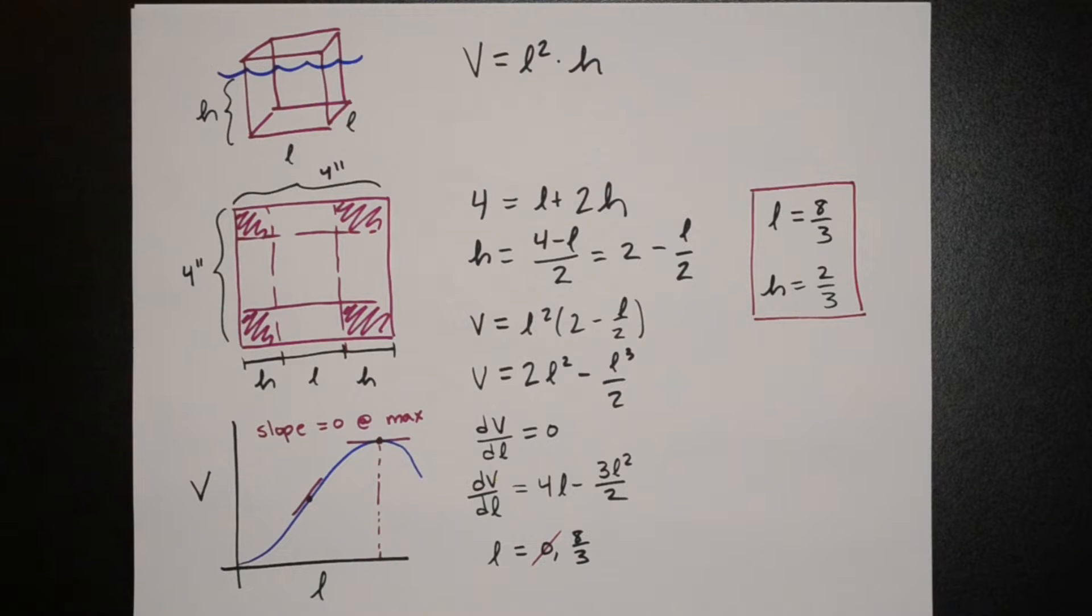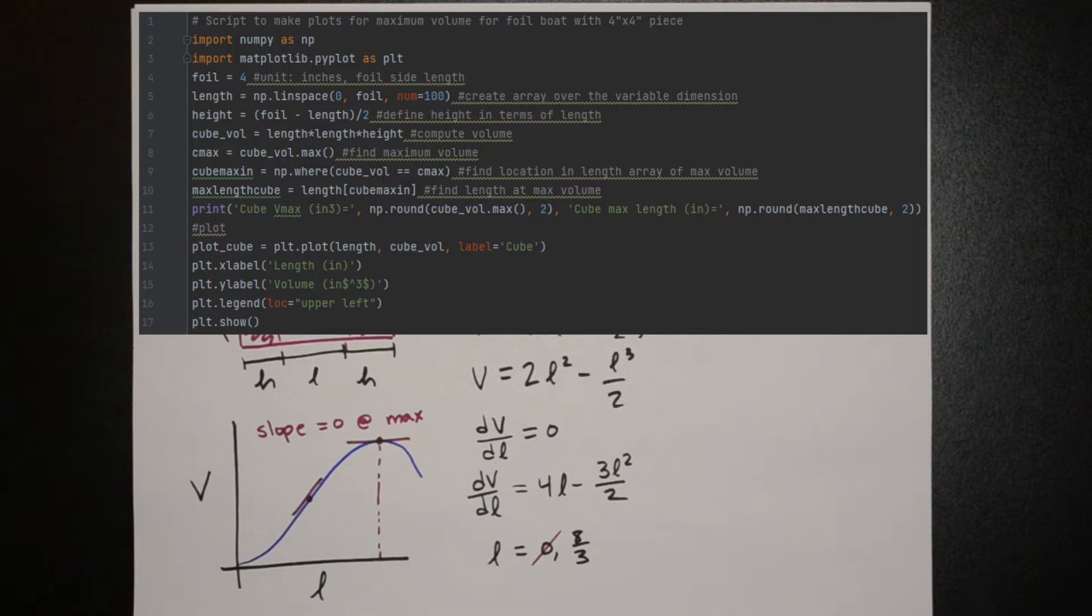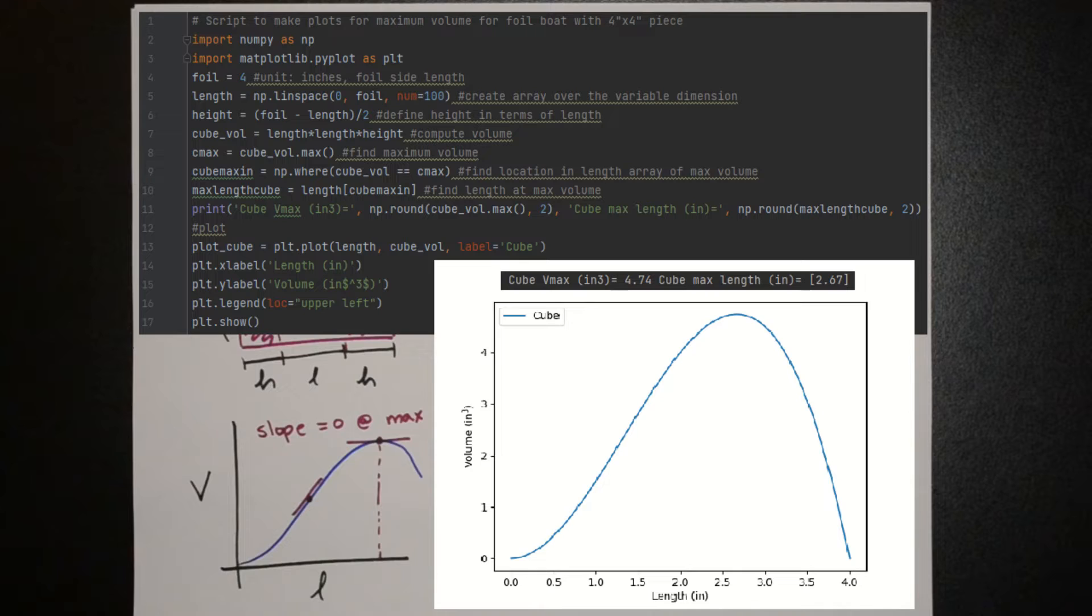We can double check our calculus by putting this into Python and checking the approximate solution. So what we see here is that our length where we get the maximum volume is 2.67 inches which if you convert that into a fraction is eight thirds. So this verifies that we did the calculus correctly.